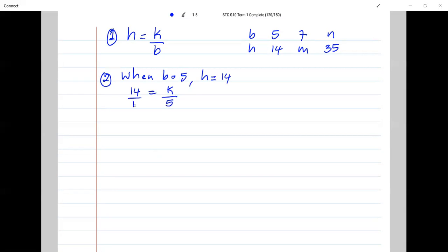If I have one fraction is equal to one fraction, what must I do? Cross multiply. Very good. So 1 times K is K is equal to 5 times 14, which if I'm not mistaken is 70. So K is equal to 70.